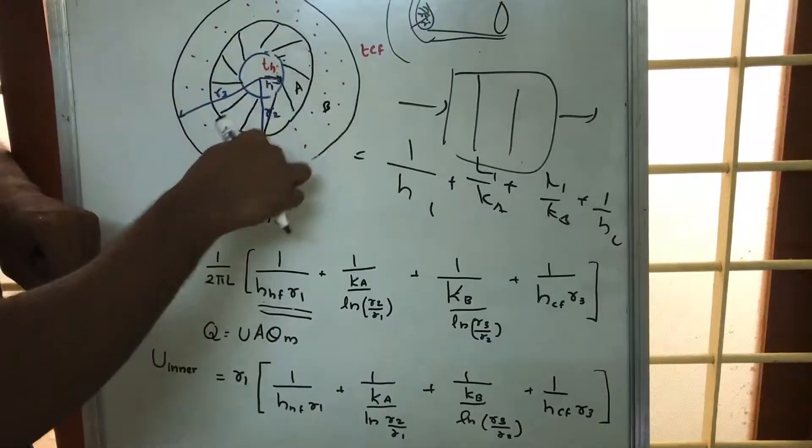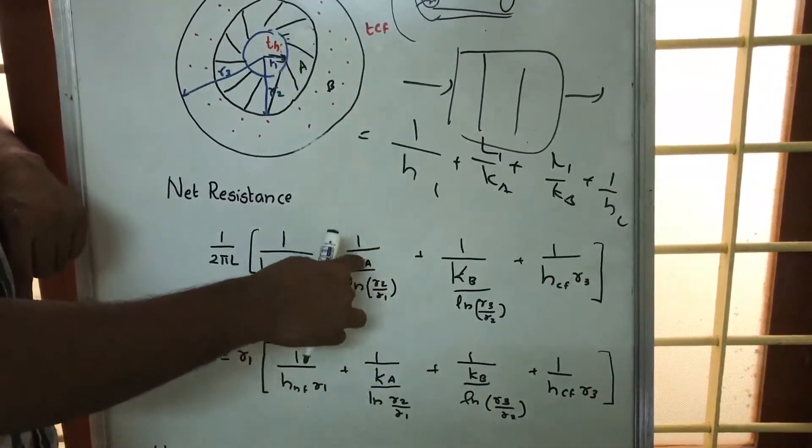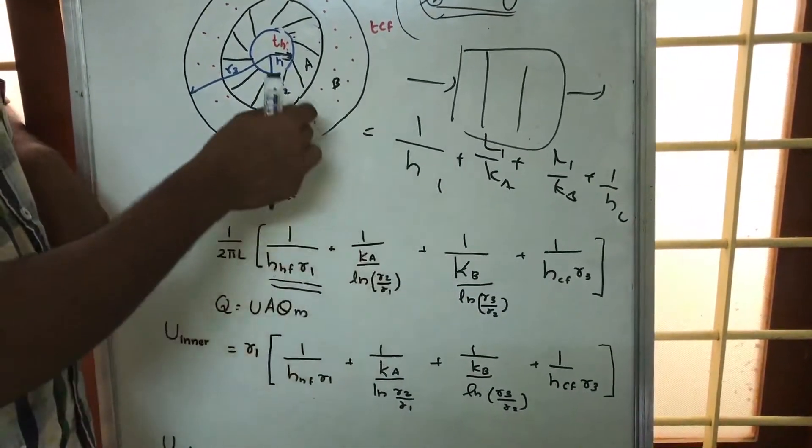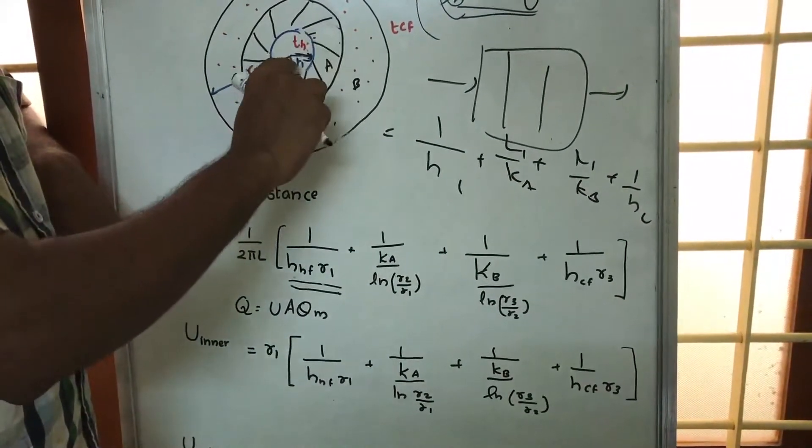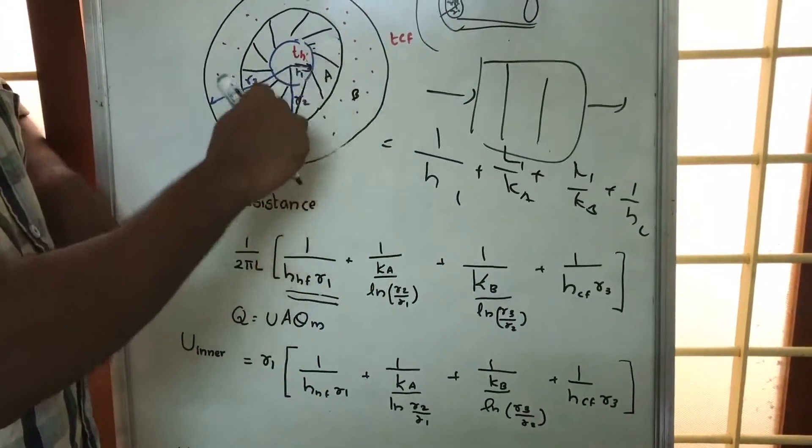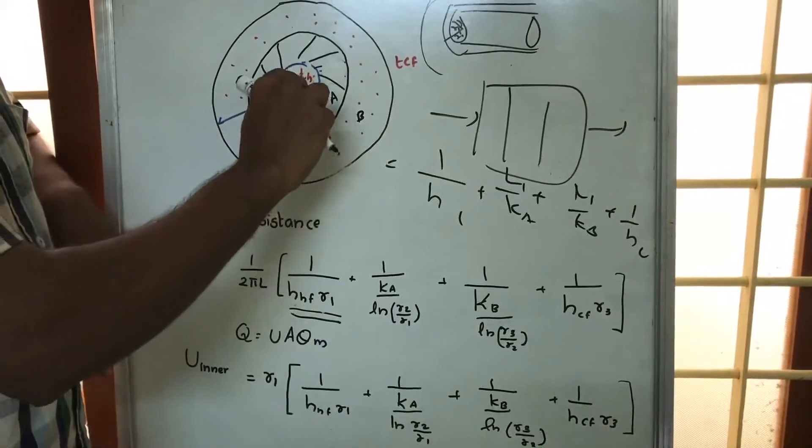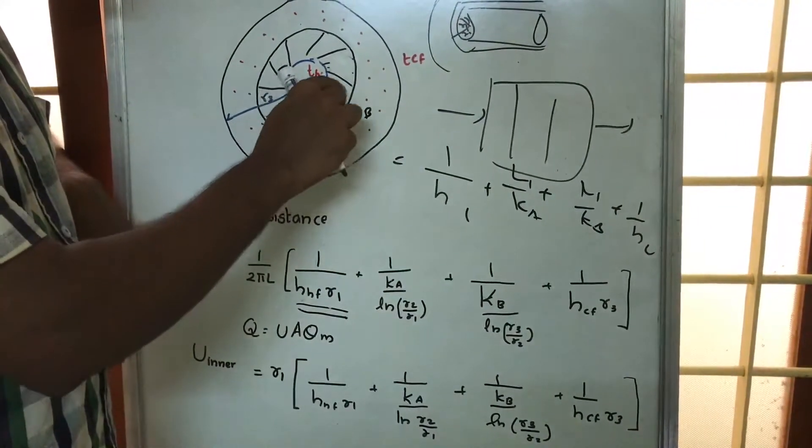Then comes material A. For material A, it is 1 by KA log R2 by R1. R2 is the outermost radius of material A, and R1 is the innermost radius of this material A.